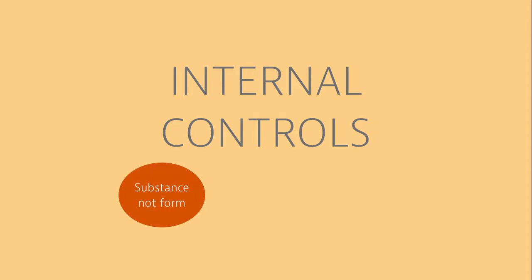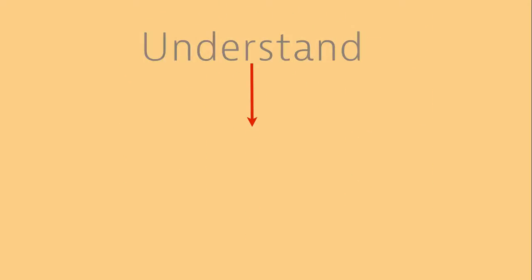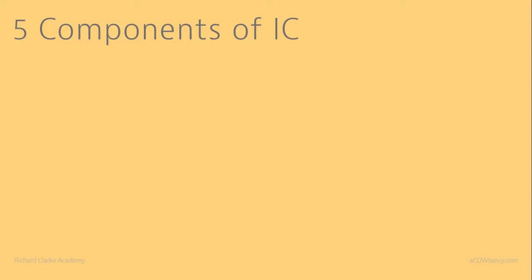Internal controls are there to make sure that we record substance, not form, and to detect fraud and error. It's the auditor's job to understand how the internal controls work so that they can work out what procedures are needed. In this basic part, we need to understand that there are five components of what makes up internal controls.